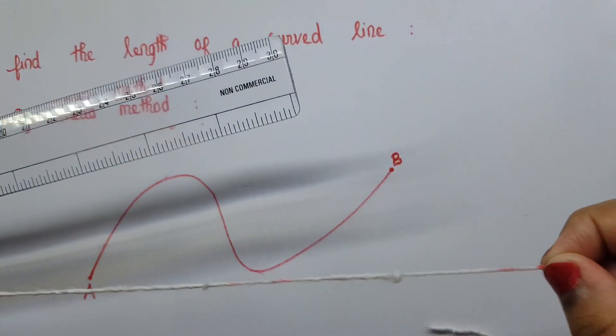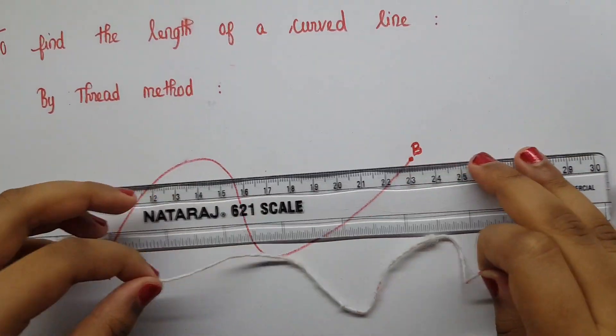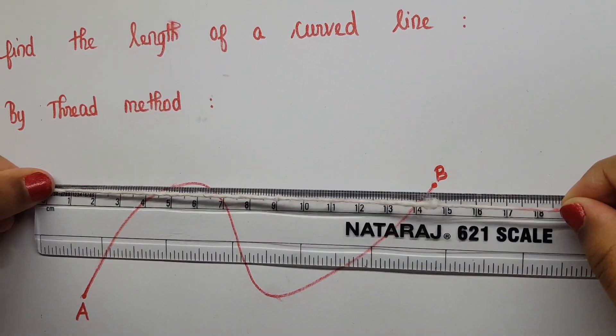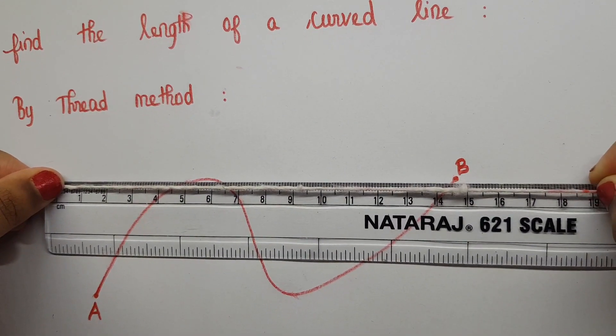Now stretch the thread and measure its length between the two marks. This gives the length of the curved line AB.